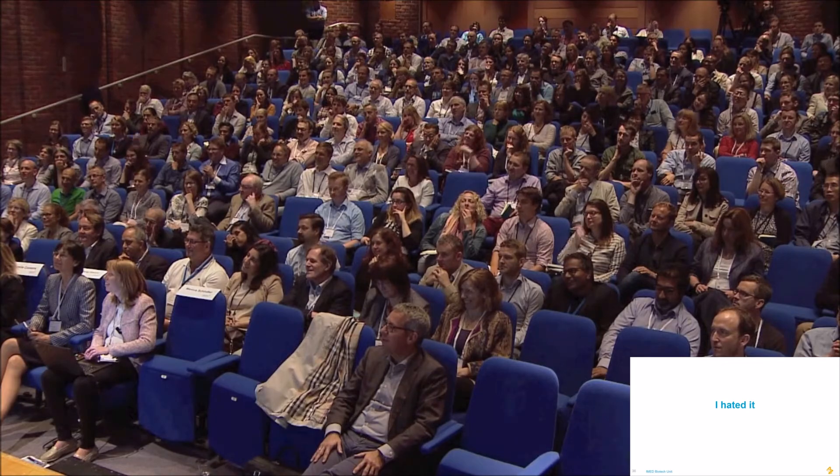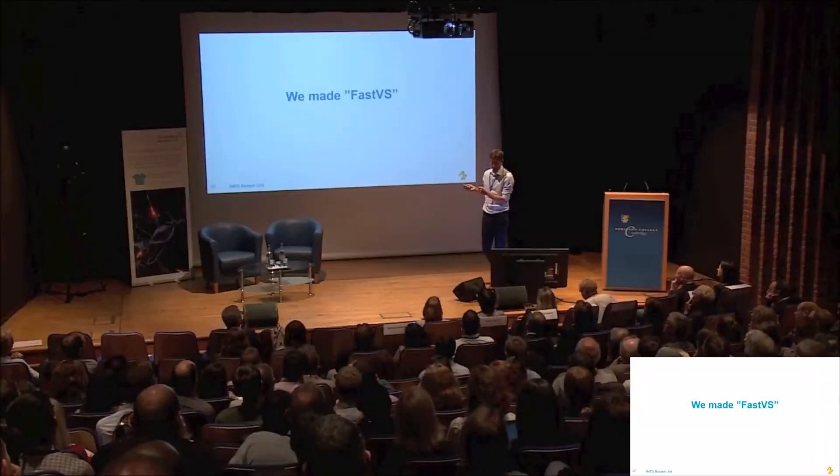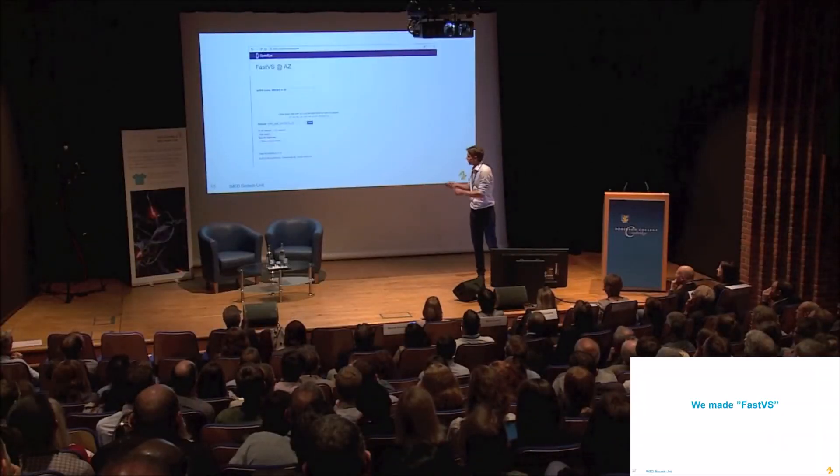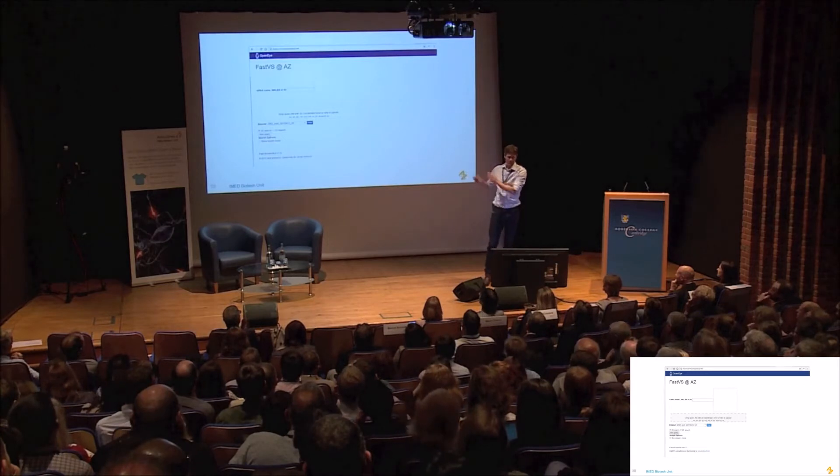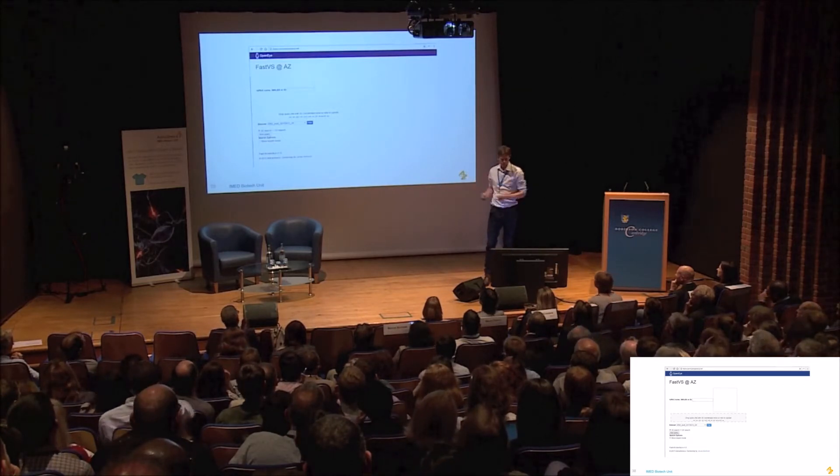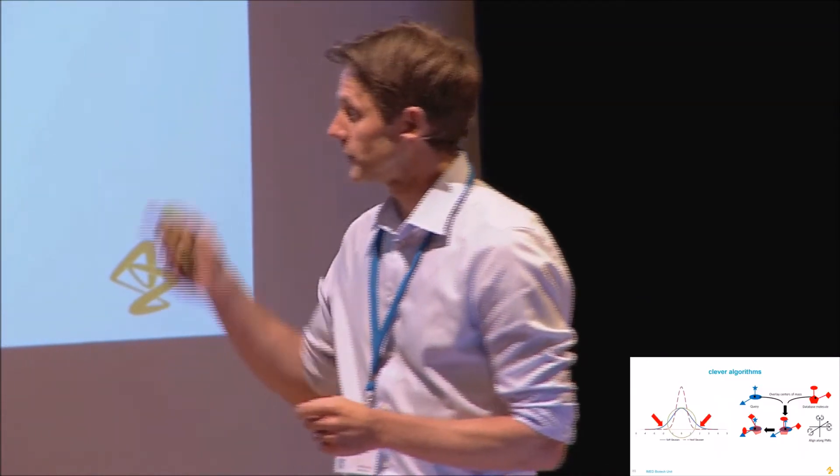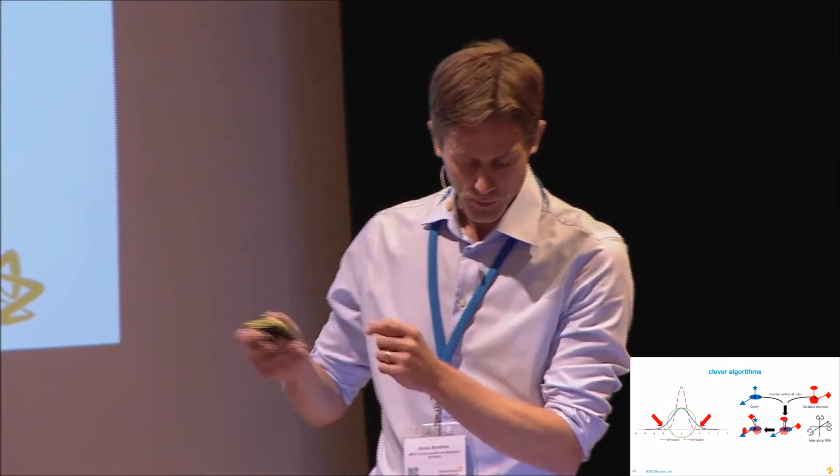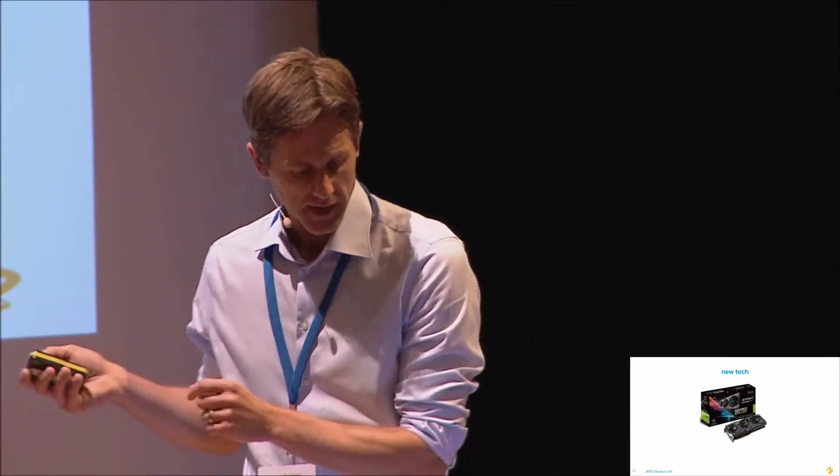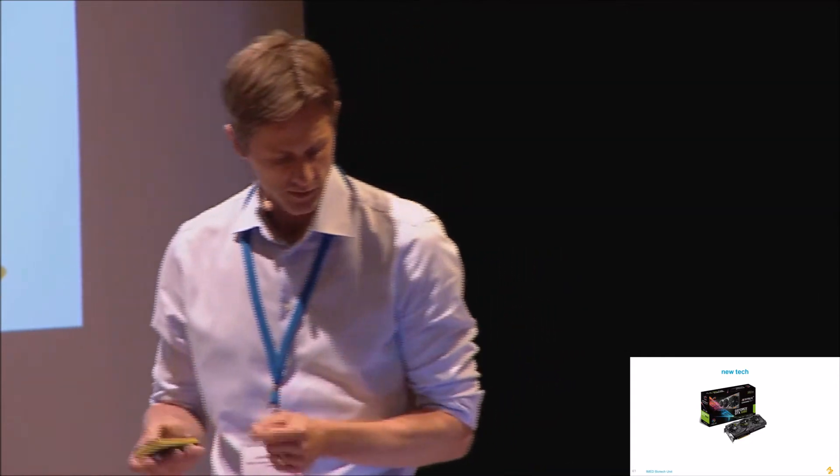So we managed to find a small pot of money, and we made this called FastVS, basically looking like this. It's a web-based frontend, and you go there and search compounds. So what's under the hood here is we use some clever algorithms. We use Gaussians. I won't bore you with the details there. And then we combine that with new technology, GPUs, so that's graphical processing units. If you combine those, you get speed.